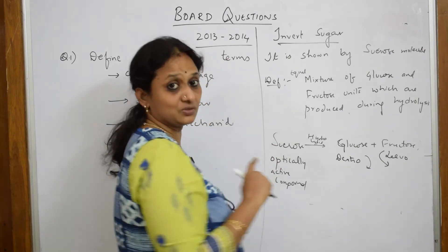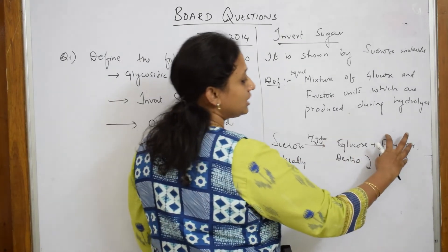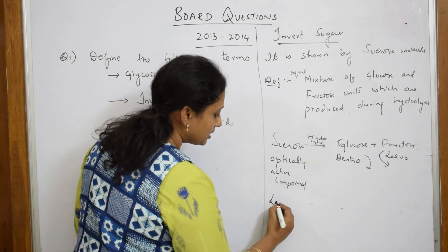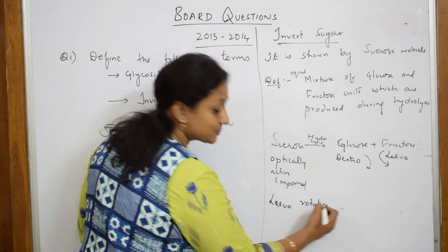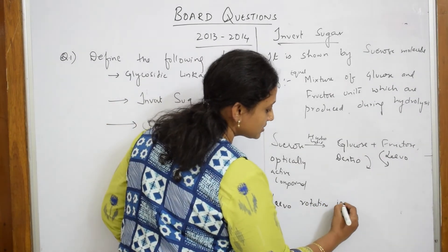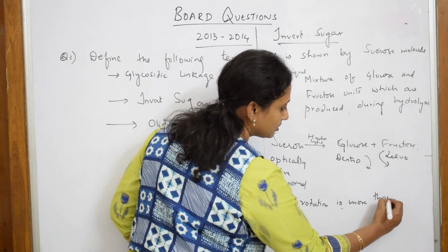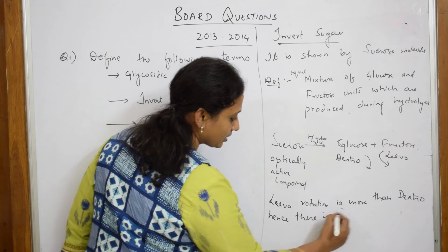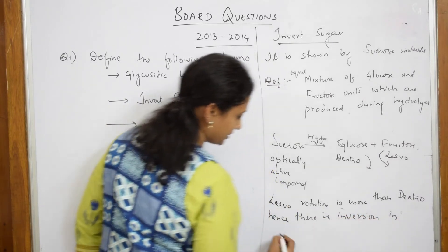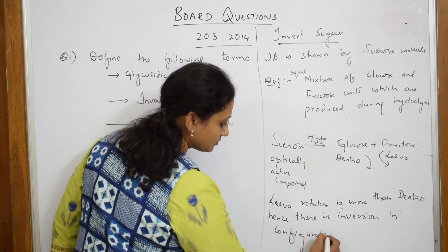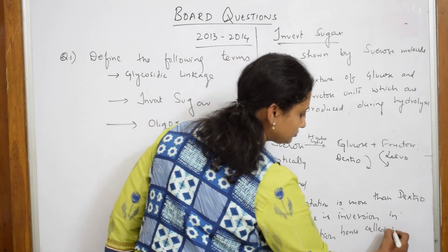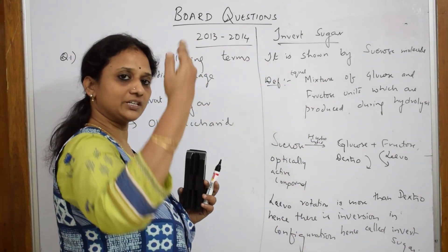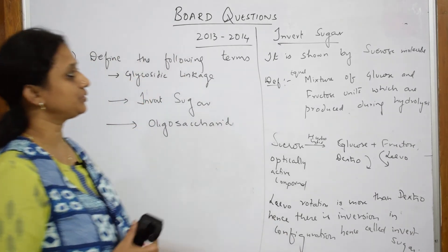The levorotatory form dominates over the dextro form. So levorotation is more than dextrorotation. Hence, there is an inversion in configuration — hence called invert sugar. From dextro, the net rotation becomes levo, so it rotates in the anticlockwise direction. That is why we call it invert sugar.